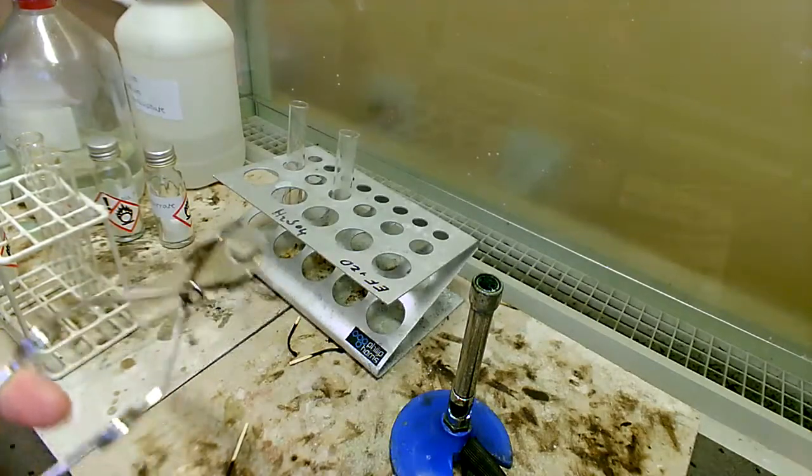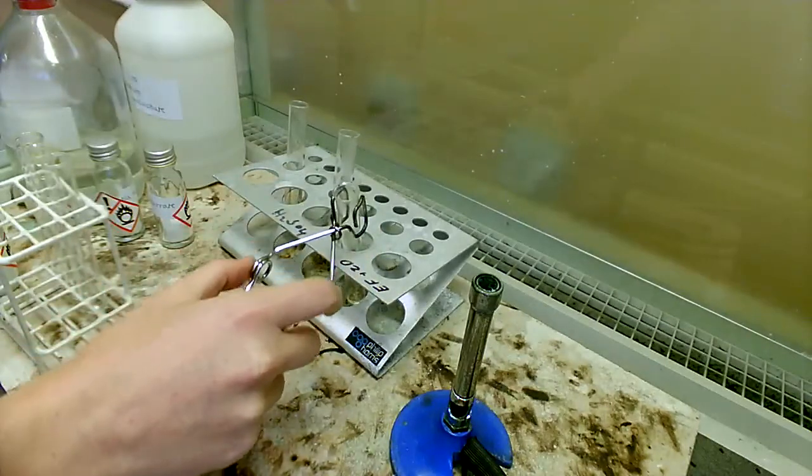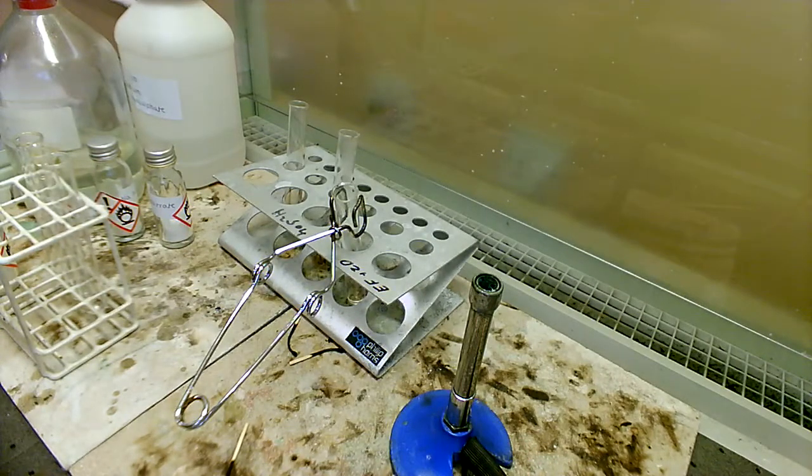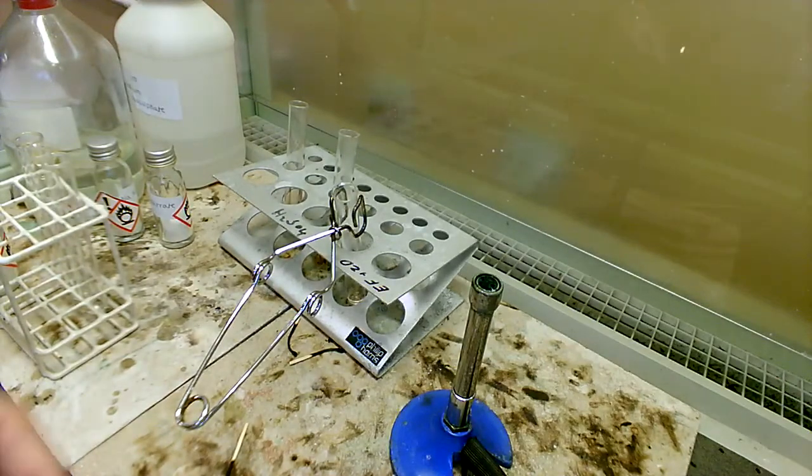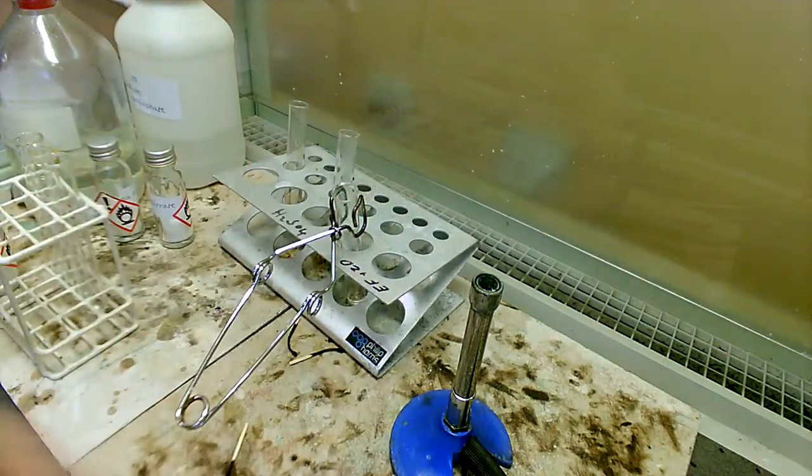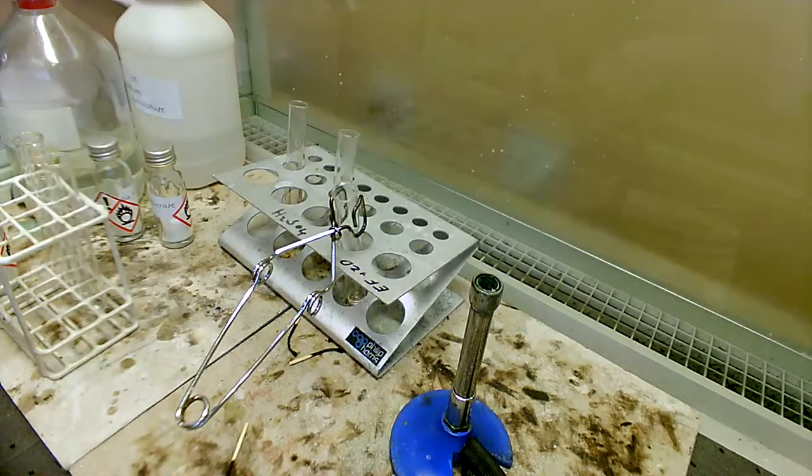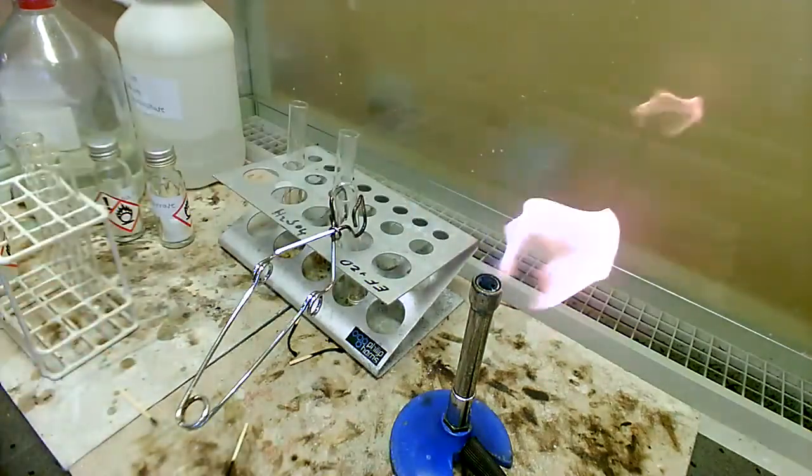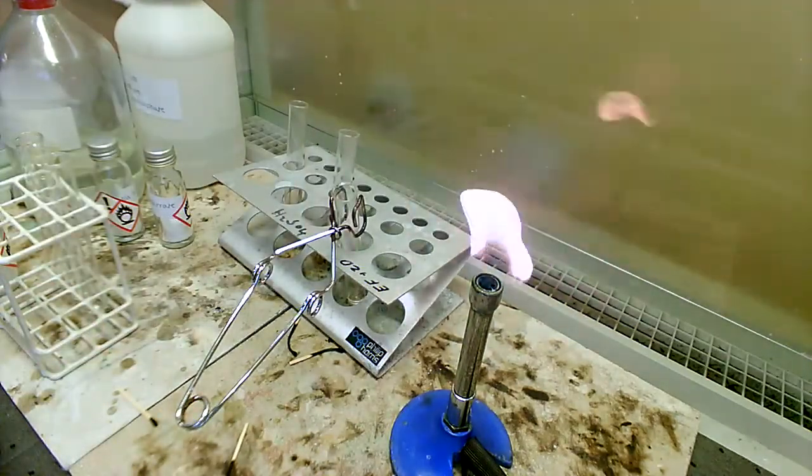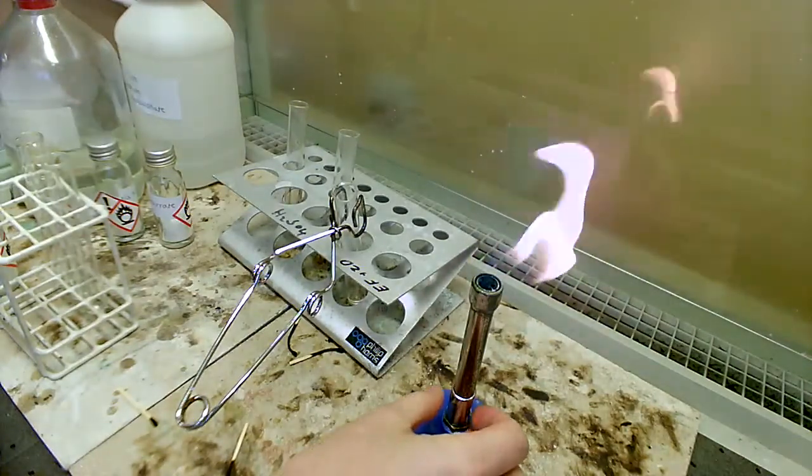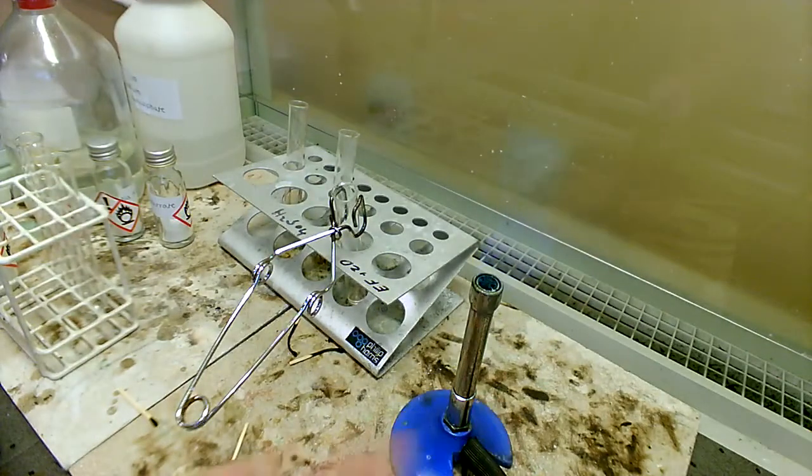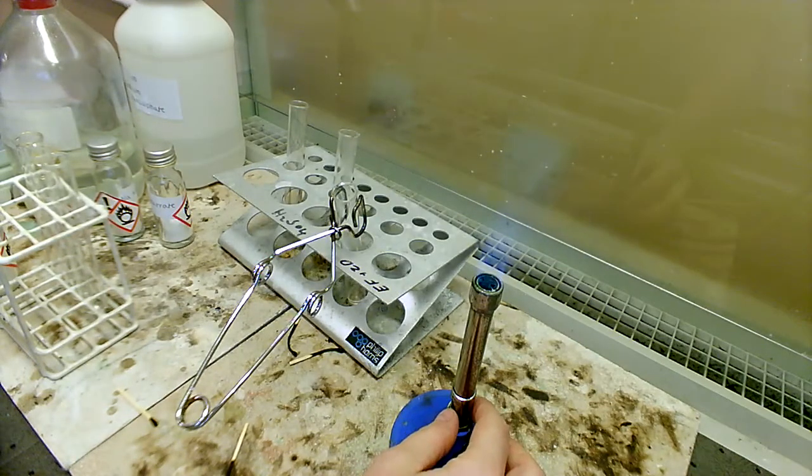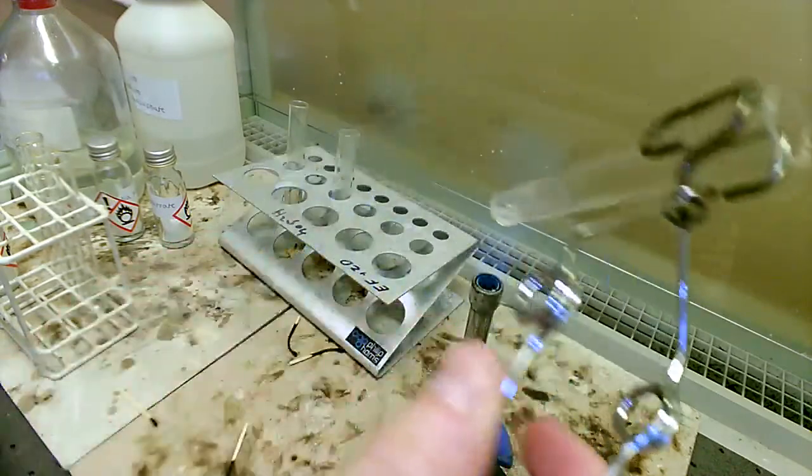Sometimes when you have the fan on at the same time as the Bunsen burner, it can cause the Bunsen burner to go out, so I just need to relight the Bunsen burner flame. You can see that the fan is definitely making the Bunsen burner not behave as we want it to, but this is what we need to do. We need to have a stronger flow of gas going through.